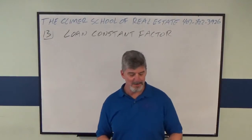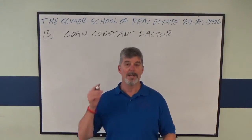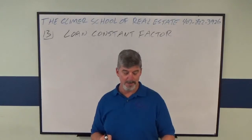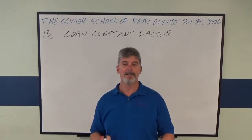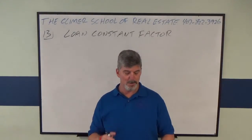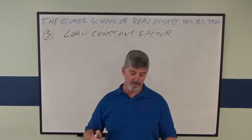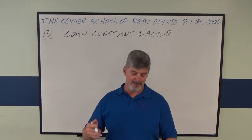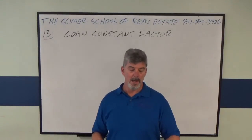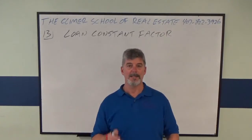A buyer is purchasing a $360,000 home with an 80% LTV mortgage. The monthly loan constant for a 6% interest rate mortgage for 30 years is .0059955. The buyer's monthly payment of principal and interest will be?